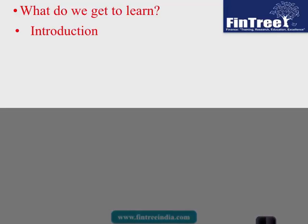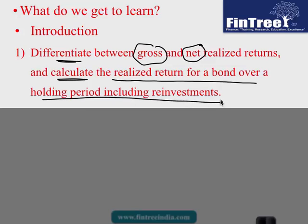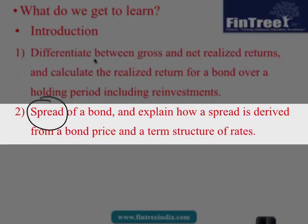This is a summary of all the learning outcomes. Number one: differentiate between the gross and net realized returns. Calculate the realized return for a bond over a holding period including different assumptions of reinvestments. Then we would learn the spreads of the bond. They haven't really specified which spread, but we know there could be Z spread or nominal spreads or G spreads or OAS, so they have a more generic discussion on spreads.